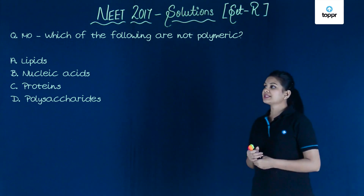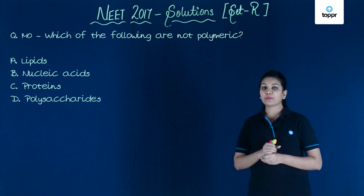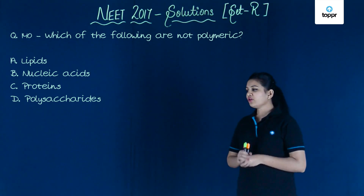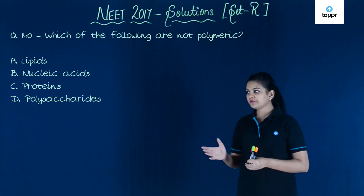In the given question they say which of the following are not polymeric? If we look at the options we'll see that the second, third, and fourth options are polymeric.